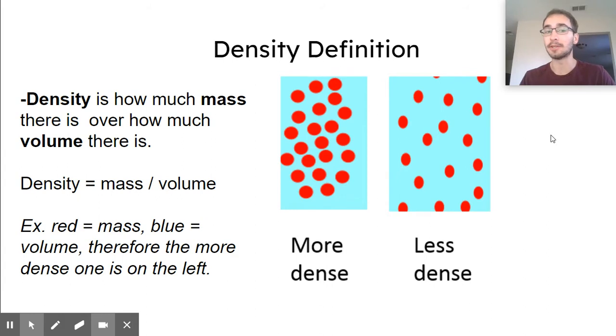And here's the new word for today. Density. The scientific definition is how much mass there is over how much volume there is. The formula is density equals mass which is like your weight over volume. I'll go over what volume is in a sec.